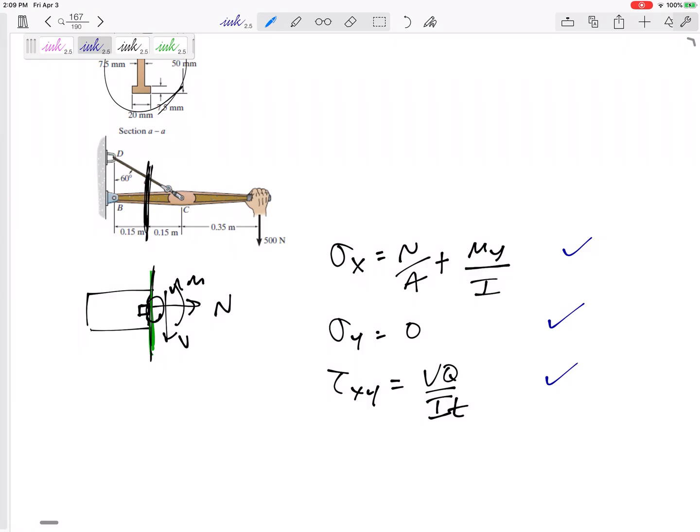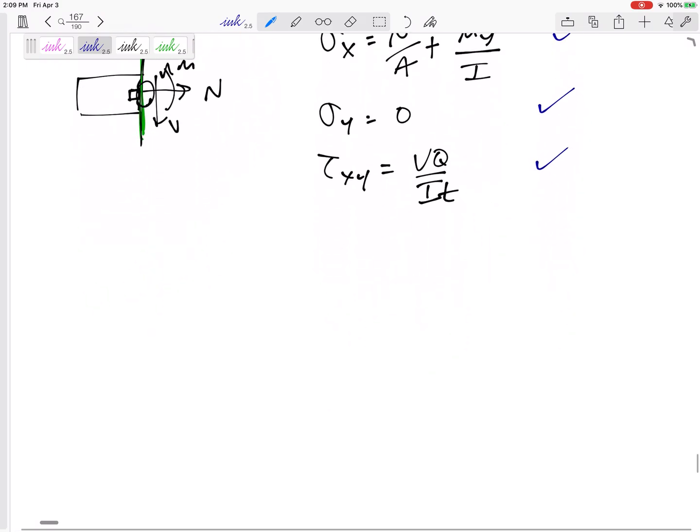Once I got these three things, then I would take those and I could find the principal stresses. That would tell me at any orientation what's the maximum normal stress and minimum normal stress I'm going to have at point A if I cut it right there at AA.